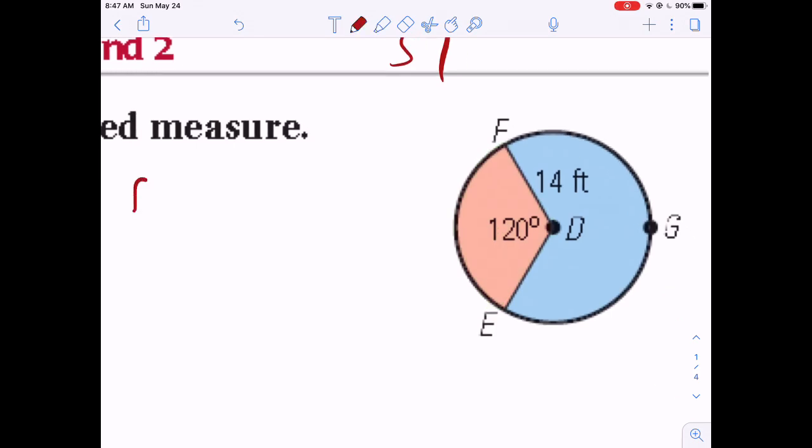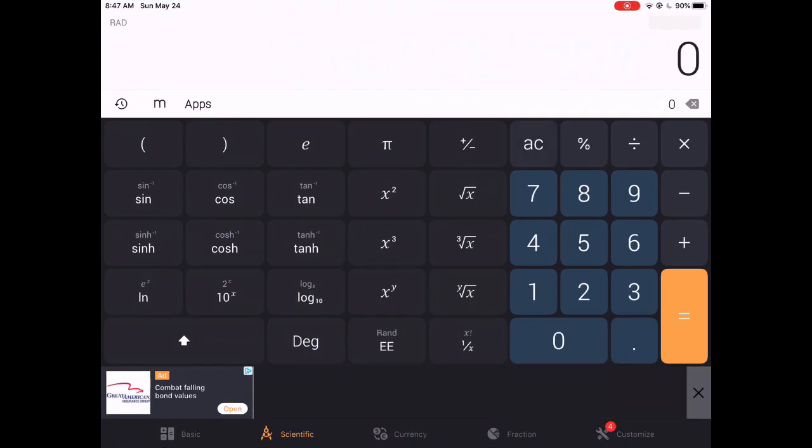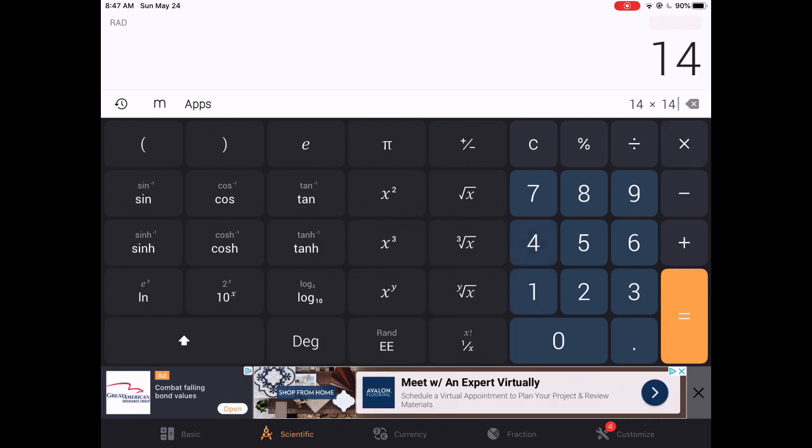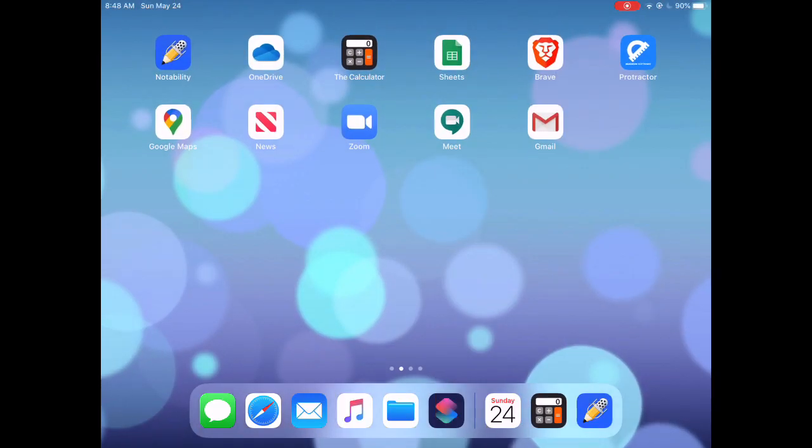So I'll go find the area. So A of the circle, the full circle, is pi r squared. So A equals 3.14 times 14 squared. 14 squared is 196. So A equals 3.14 times 196. So back to my calculator. 14 times 14, that's the 14 squared, 196, times 3.14, 615. Again, I'm rounding these off just to keep numbers simple for everybody here.